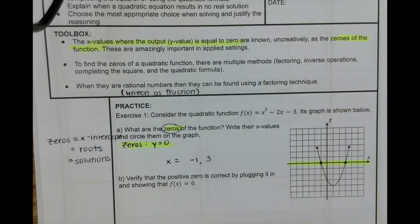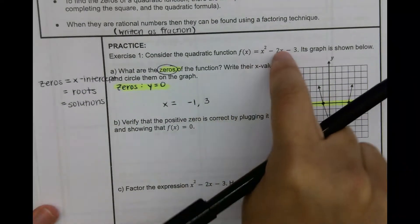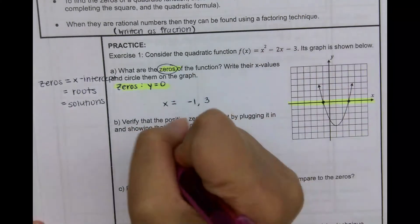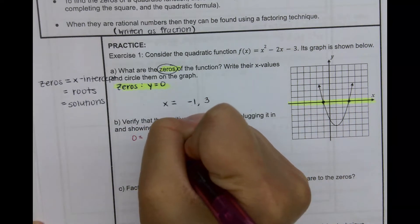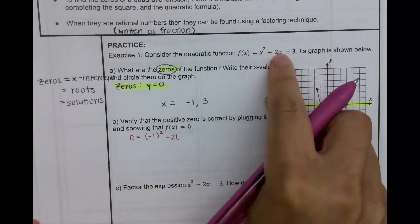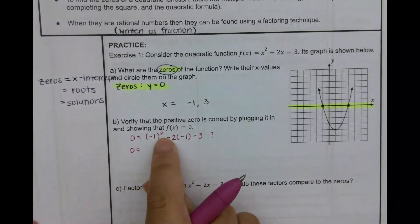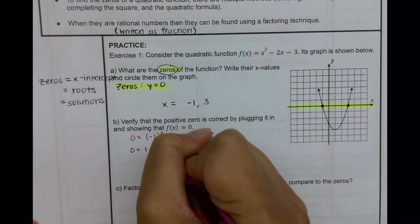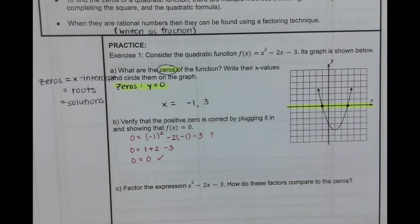So we're going to verify that this is true by plugging it in. The first one I'm going to do is plug in negative one. Let's see if that equals zero. So: zero equals negative one squared minus two times negative one minus three. Negative one squared is positive one. Negative two times negative one is positive two, so plus two minus three. One plus two is three, three minus three is zero. Yes, it checks out — negative one is a solution.